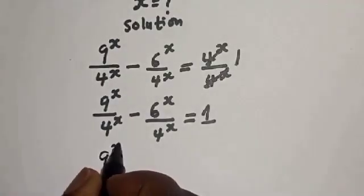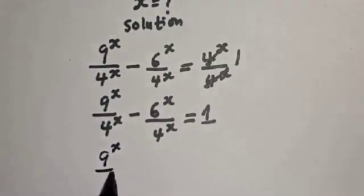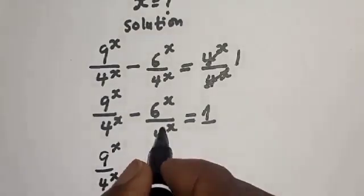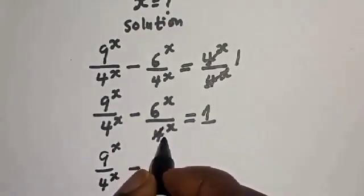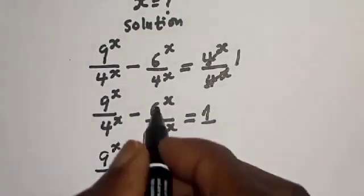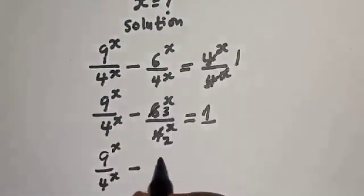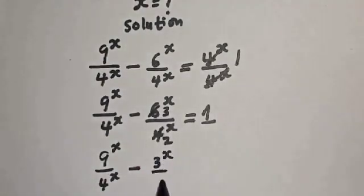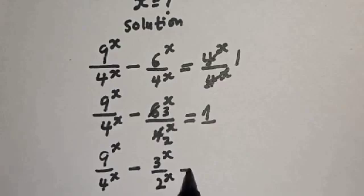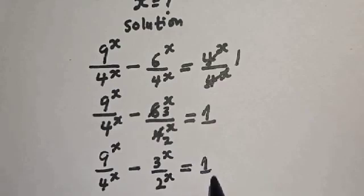So we have 9 raised to the power s over 4 raised to the power s, minus 6 raised to the power s over 4 raised to the power s, equals 1. Simplifying, we get 3 raised to the power s over 2 raised to the power s, equals 1.